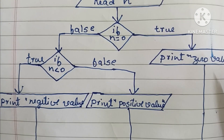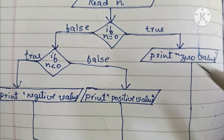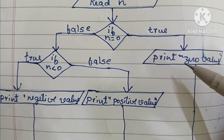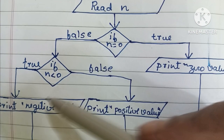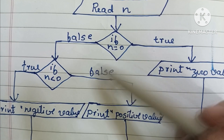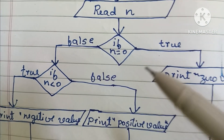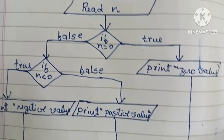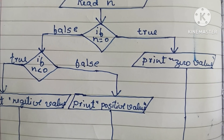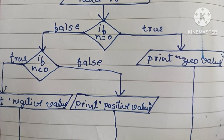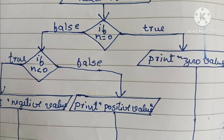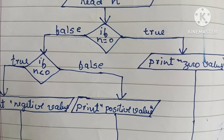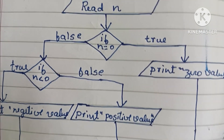Input and output values are written within a parallelogram shape, and comparisons are done within a diamond shape. If you like this video, please like and subscribe to my channel. Thank you for watching — all the best!